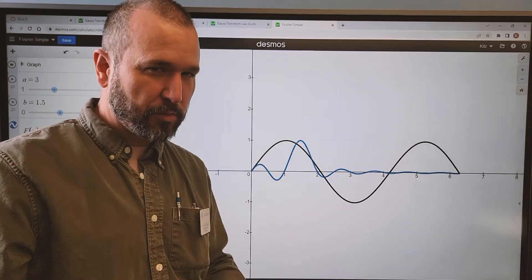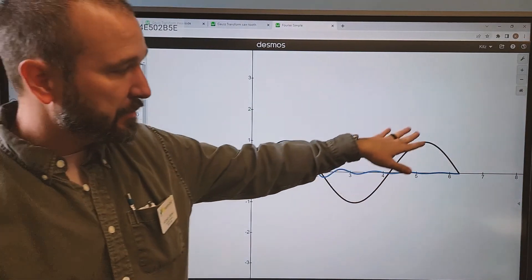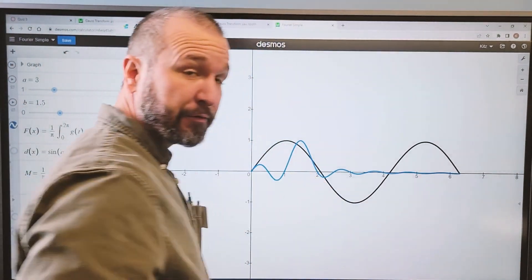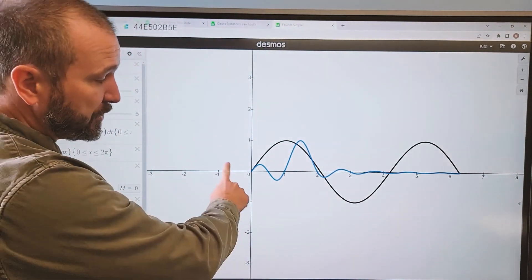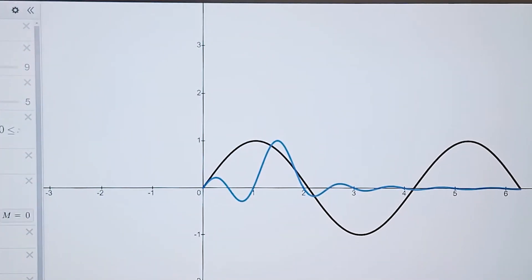Okay, poor Desmos has to do a lot of math in order to spit out these Fourier transforms. Right now, I have set the frequency of the original wave to be 1.5 and you can see there's one and a half total curves happening. And you can see in the Fourier transform of this wave, there is a spike right there at 1.5.